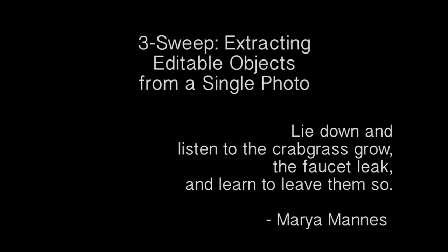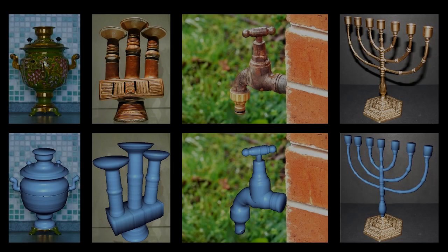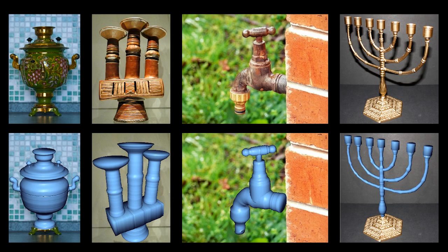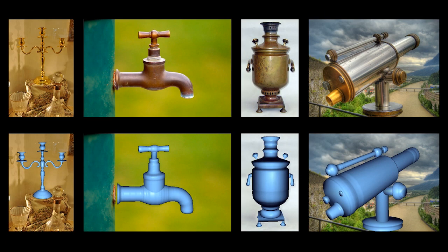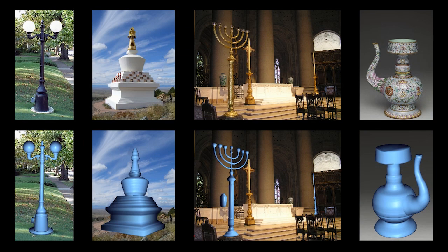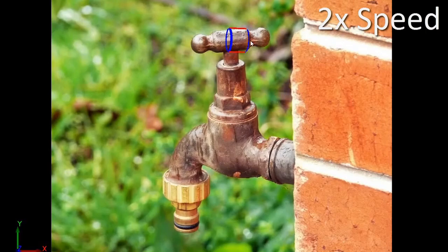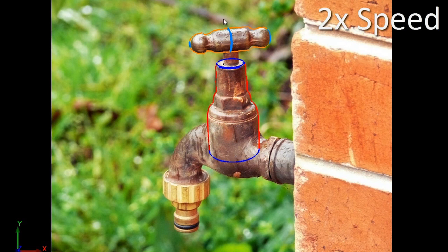The researchers here have introduced an interactive technique for manipulating simple 3D shapes, based on extracting them from a single photograph. The system reshapes the component to fit the image of the object in the photograph, as well as satisfying various inferred geometric constraints imposed by its global 3D structure.